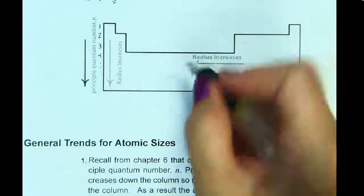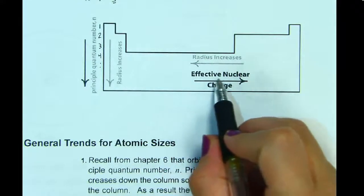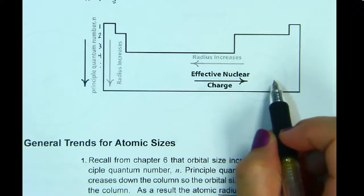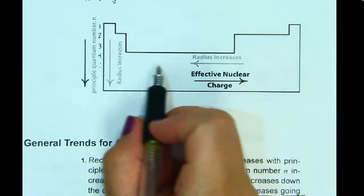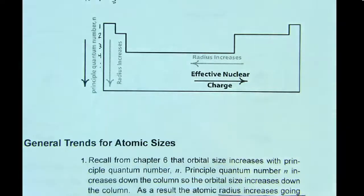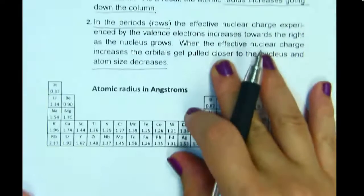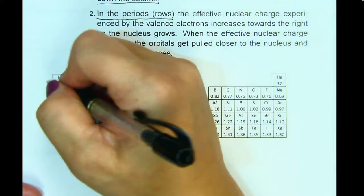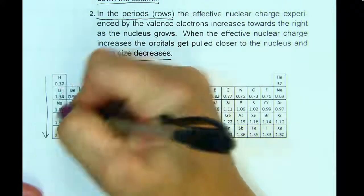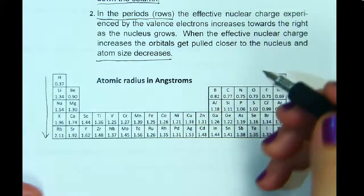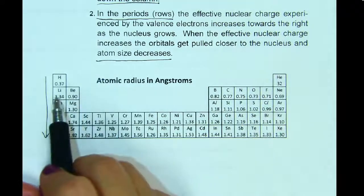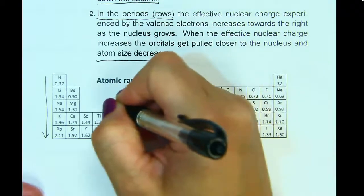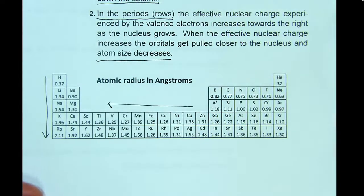As effective nuclear charge increases, the size of the atom gets smaller. Radius increases going down a group and increases going toward the left in a row. Here's a chart showing atomic radius in Angstroms — you can see the radius increasing going down a period and getting smaller going from left to right across a row.